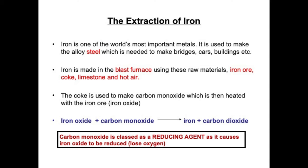A reducing agent is a substance that causes another to lose oxygen. Looking at the overall equation, iron oxide reacts with carbon monoxide to form iron and carbon dioxide. The carbon monoxide is classed as a reducing agent because it causes the iron oxide to be reduced — to lose oxygen — to form iron. Limestone is used to remove impurities, which we'll discuss later, and hot air is needed for the coke to burn, supplying the high temperatures needed for the blast furnace to work and also making carbon monoxide. We need hot air rather than air because high temperatures mean a faster reaction, and the furnace operates at around 1500 degrees C.